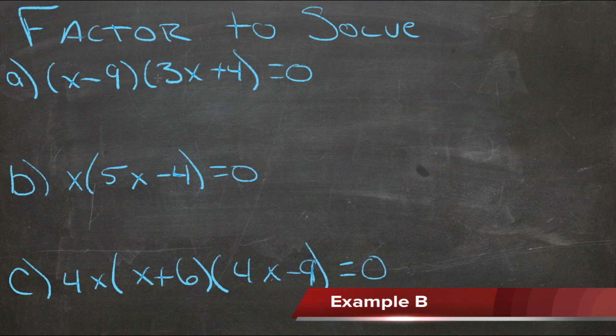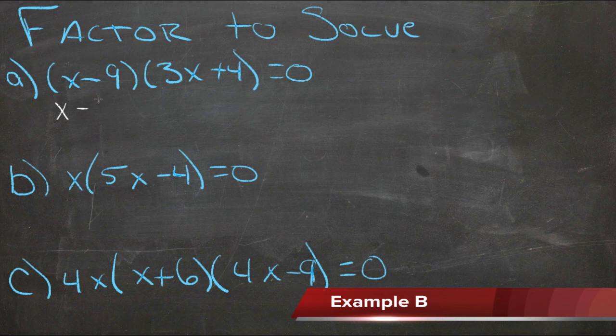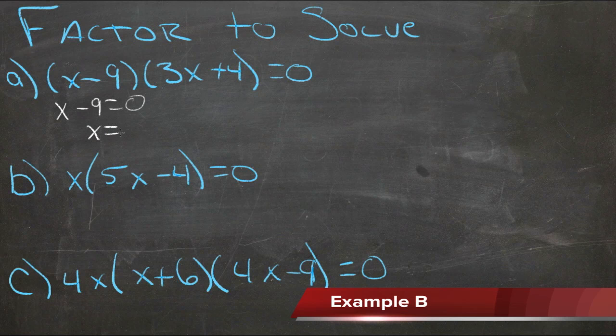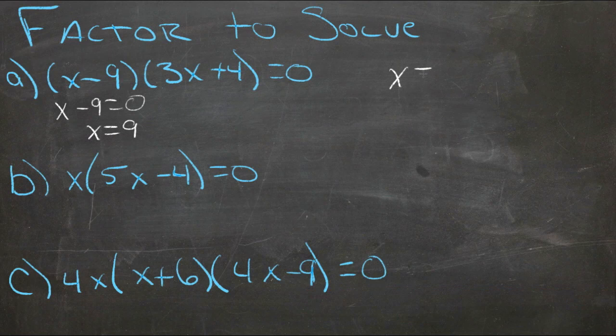In this case, we have x minus 9 times 3x plus 4 equals zero. So in order to make x minus 9 zero, x minus 9 equals zero, we just have to add 9 to both sides, and we see that x equals 9. So 9 is one solution.